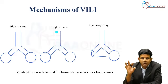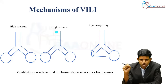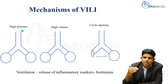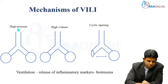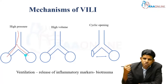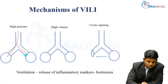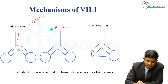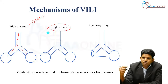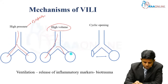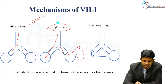Whenever you put a patient on positive pressure ventilation, this positive pressure goes to the alveoli. If the positive pressure is excessive or inappropriate, it will cause injury to the alveolus — this is called barotrauma, which is high pressure-related. The second mechanism is volutrauma: inappropriate or excessive volume delivery to the patient's lung causes over-distension and deformation of the alveoli.